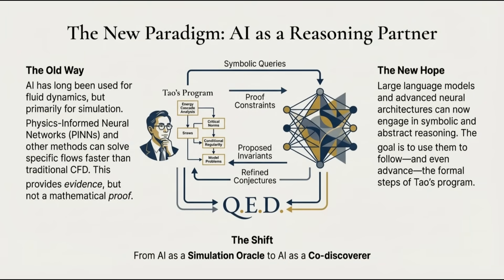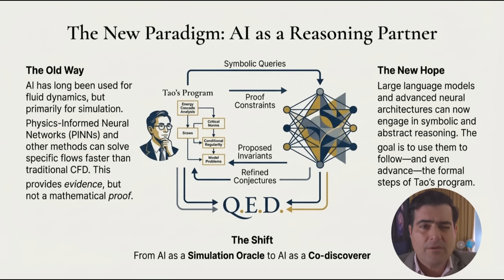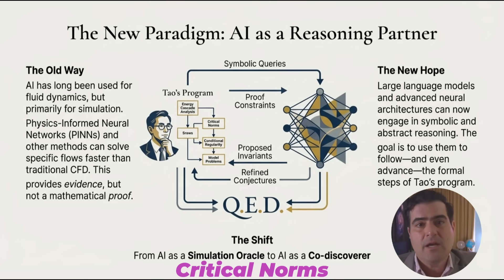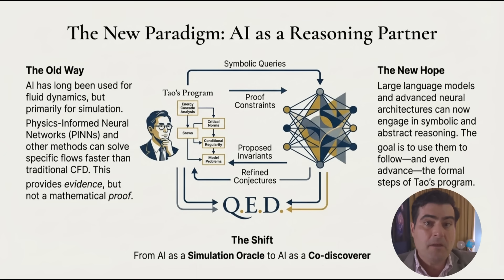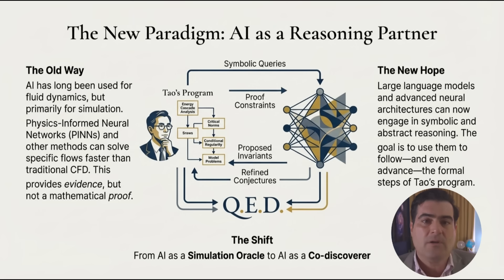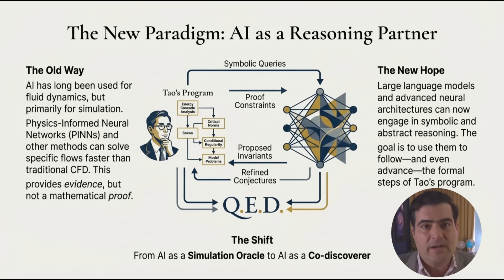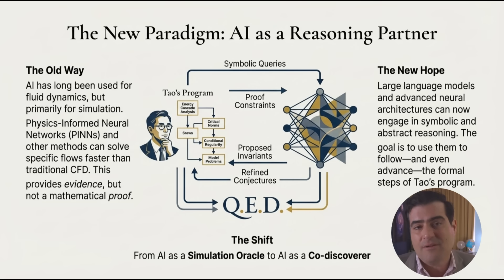Tao's program is essentially an attempt to track the energy — to book-keep it — to make sure that we can prove mathematically that the energy can never pile up fast enough to break the system. He needed to tame the cascade. The strategy relies on finding invariants: things that, due to symmetry, never change. Think of conservation of energy. In the chaotic mess of a storm, are there quantities that refuse to change? These are called critical norms. If you can find a quantity that remains invariant under scaling — meaning it doesn't get bigger even as the swirls get smaller and smaller — you have a leash to tame the chaos. The goal is to prove that these critical quantities stay bounded and finite. If they have a limit, then the velocity can never go to infinity, and the system can never blow up.